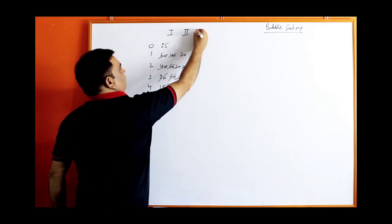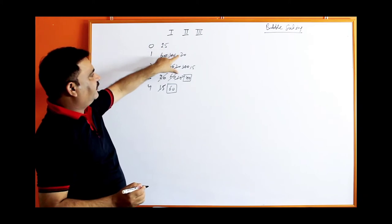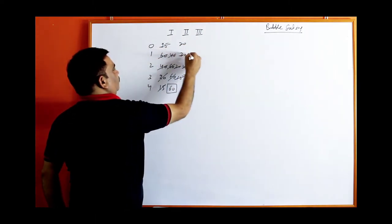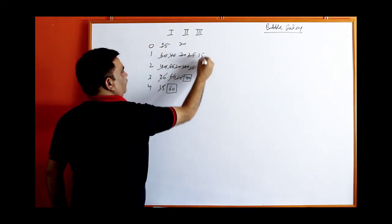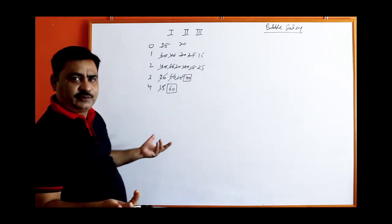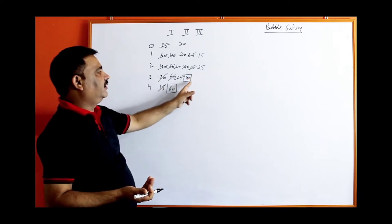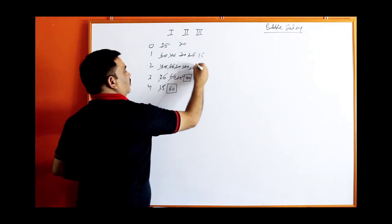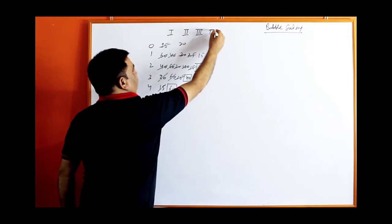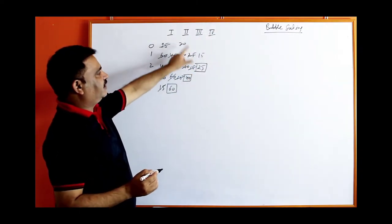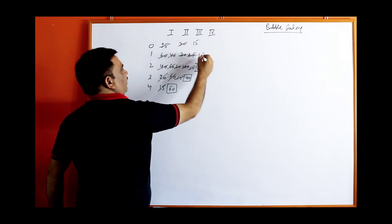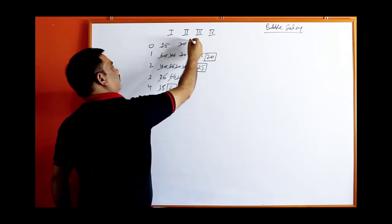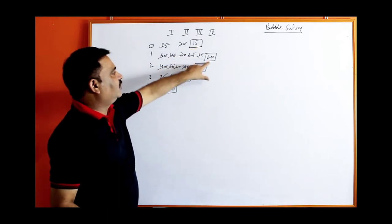Third round, same process. Values are 25, 20, 15, and then the arranged ones. 25 is greater than 20 — yes, swap. 25 is greater than 15 — yes, swap. 25 is greater than 40 — cannot be, because it was already arranged, and 40 can never be greater than 60. So the third value is now also arranged. Now fourth round: 20 is greater than 15 — yes, so 15 and 20 will be exchanged. Now 20 is arranged and 15 will be automatically arranged. So now all values are in ascending order.